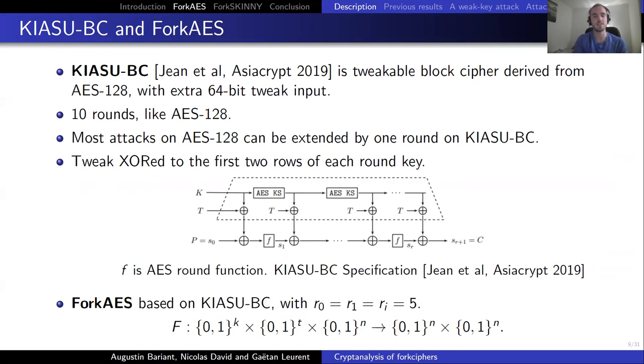ForkAES is based on KiasuBC with R0 equal R1 equal RI equal 5. So the branches are exactly half of the cipher. There is a loss of diffusion, but no more rounds added.